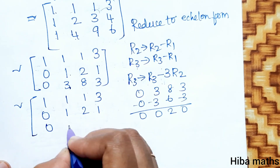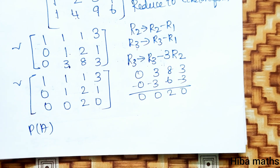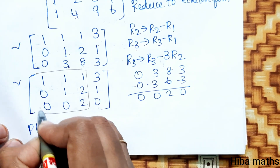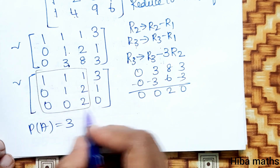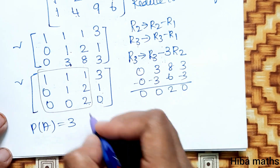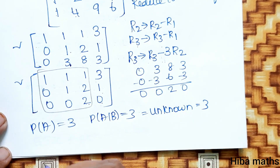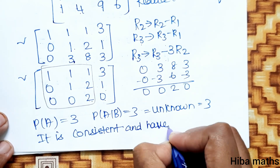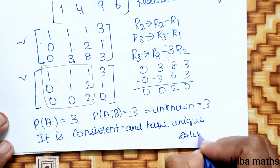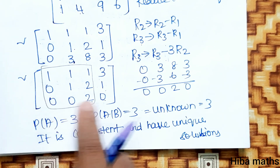The echelon form is now obtained. The rank of A and the rank of the augmented matrix [A|B] are both equal to 3, which equals the number of unknowns. Therefore the system is consistent and has a unique solution.